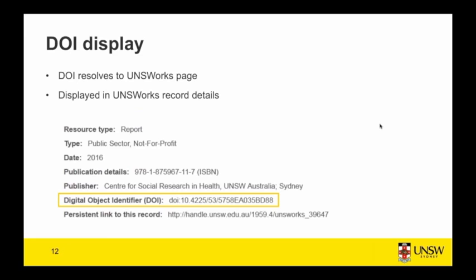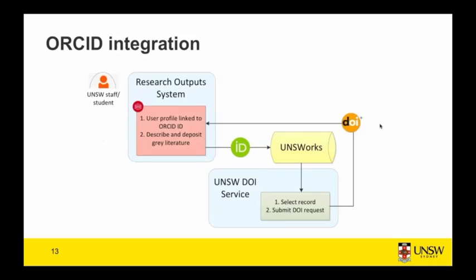Back on the UNSW Works institutional repository page, if you resolve the DOI it takes you to the landing page and the DOI itself is displayed in the record details as part of the metadata about the publication. We are also aiming where possible to include ORCID IDs — identifiers for researchers and contributors to research outputs — to be included in the DOI metadata.